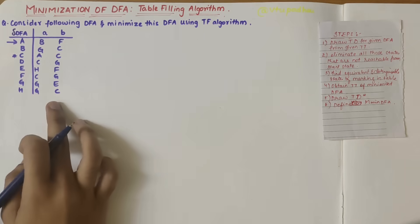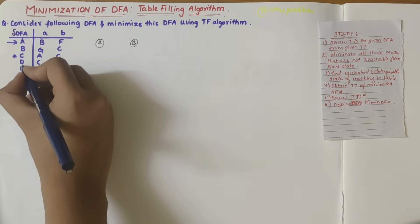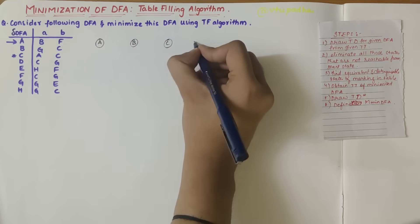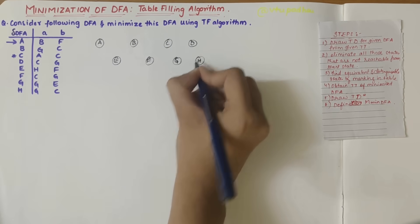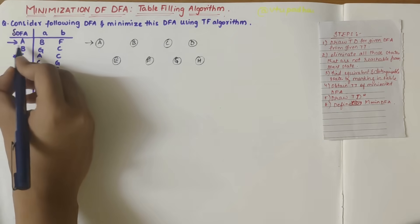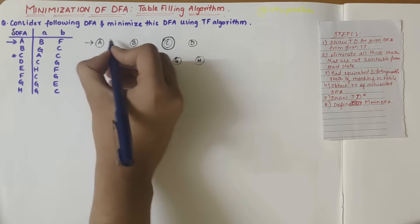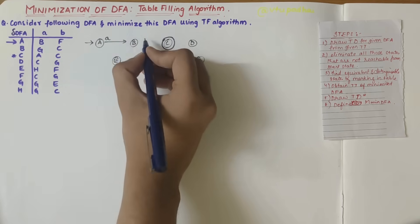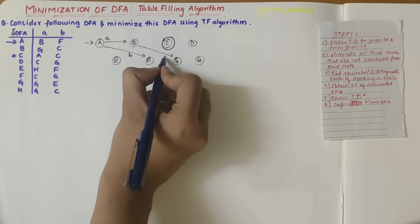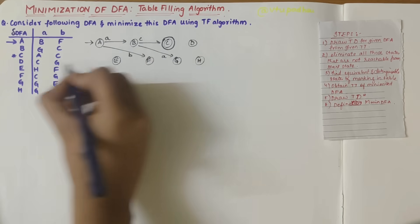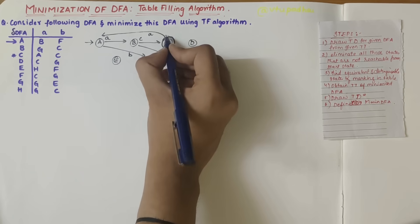Here is the transition table. There are eight states: a, b, c, d, e, f, g, and h. Let's start showing the transitions — a being the start state and c being the final state, circled twice. From a on input a gives b, a on b gives f, b on a gives g, b on b gives c, c on a gives a, c on b gives c itself.